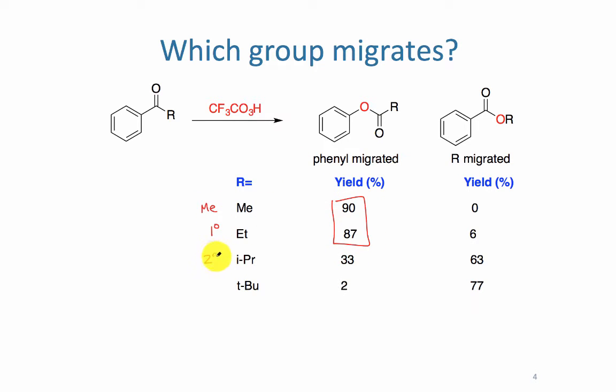When we have a secondary or tertiary R group, or potential migrating group, now it's that group that becomes major.